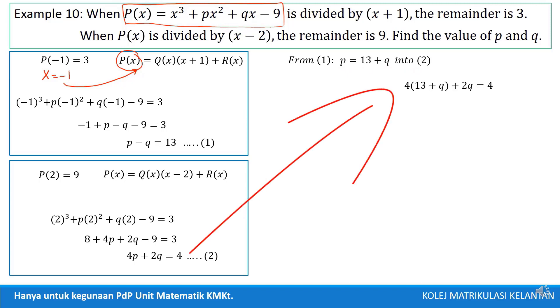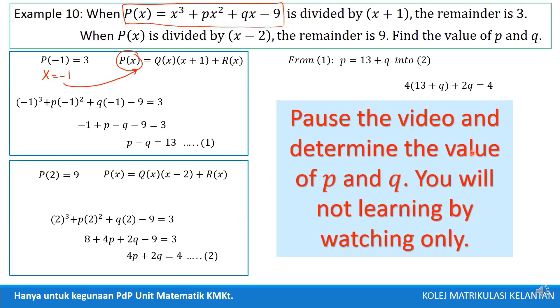Put into the equation 2. So, it's become 4 times 13 plus Q plus 2Q equal to 4.